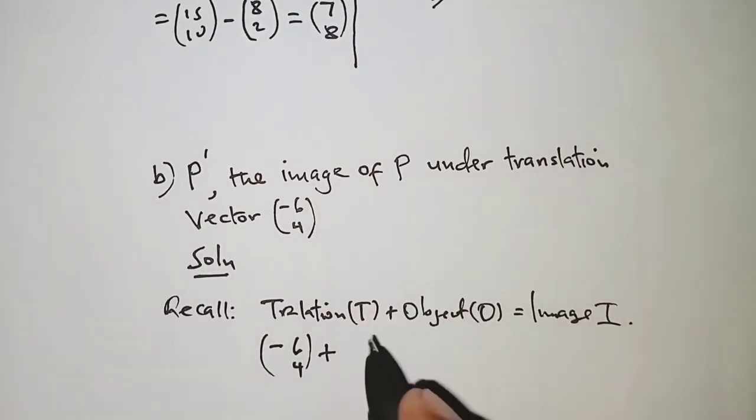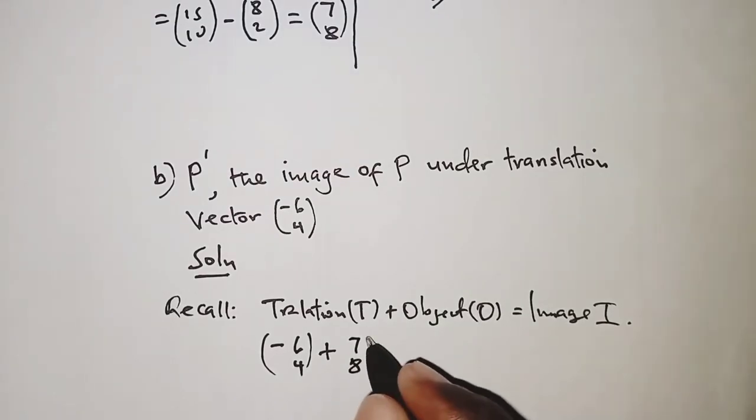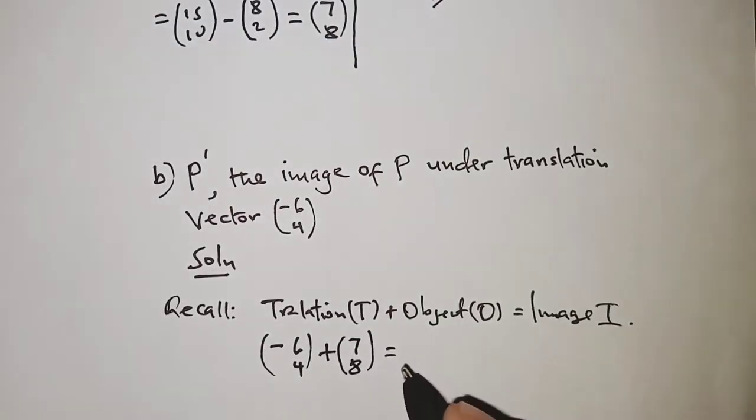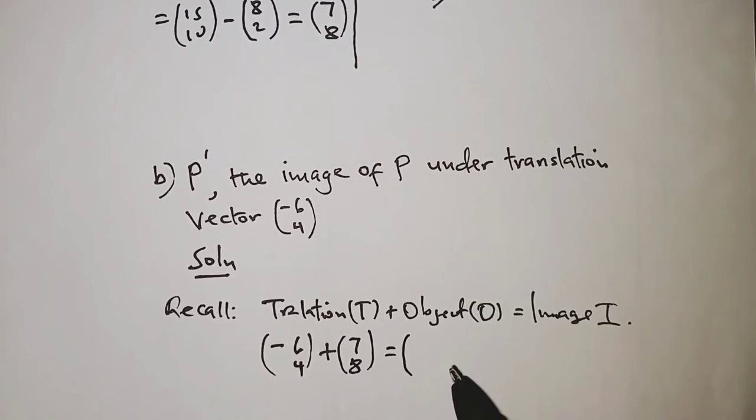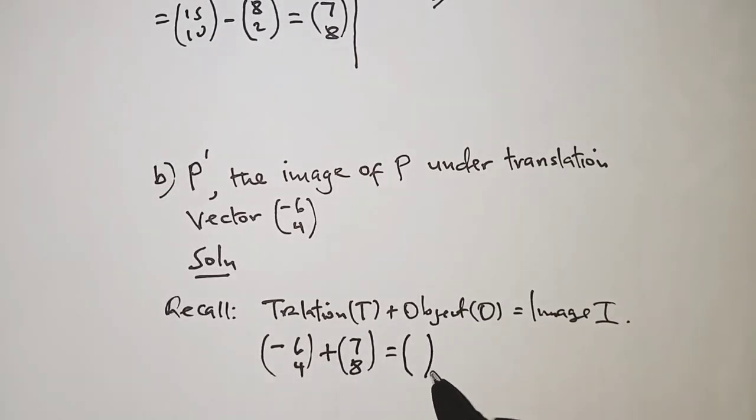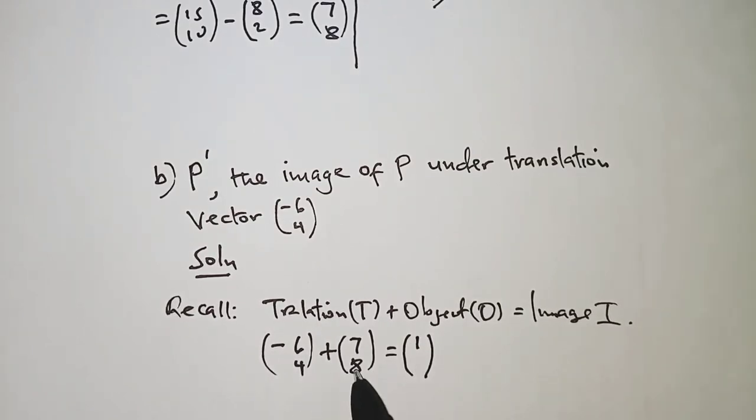So, plus (7, 8) should give us the image. That is what we are looking for. So we have -6 plus 7, that is 1, and 4 plus 8, that is 12.